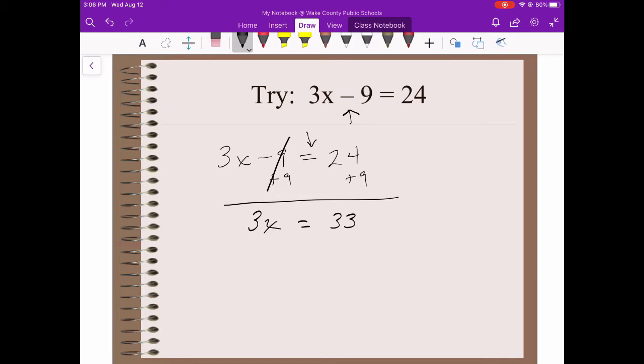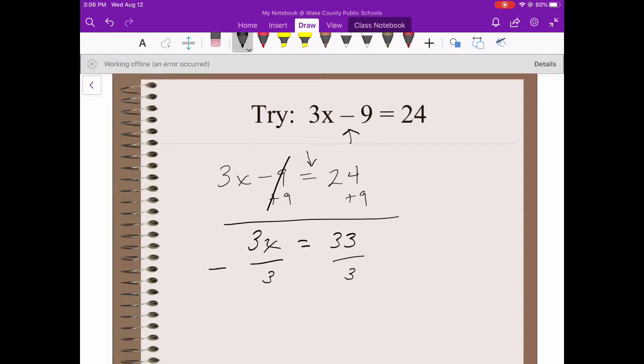Remember, 3 jammed up next to x means multiply. So 3x is 3 times x. How do I un-multiply? I divide. So I need to divide both sides by 3. I'm going to use division bars, make it look like a fraction, but do remember that that bar means divide. 3x divided by 3, 3 divided by 3 is 1. So this is the same as 1x, but because we're trying to get x by itself, 1x is the same thing as x.